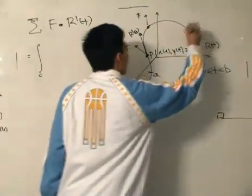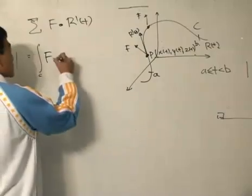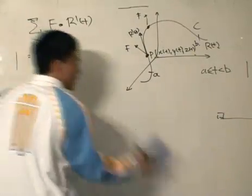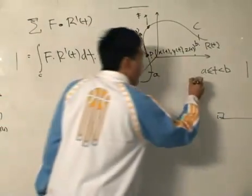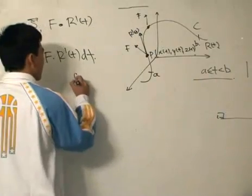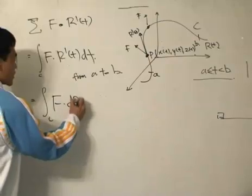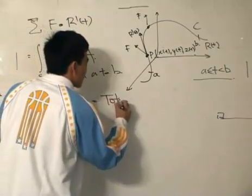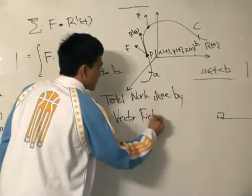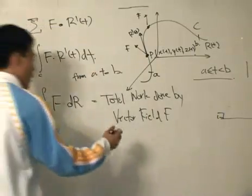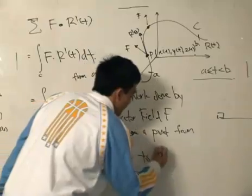Summing those individual contributions gives us the line integral over curve C: the integral of F dot dR with respect to t, from A to B. This is exactly our first definition of the line integral, which equals the total work done by vector field F to move a point from A to B.